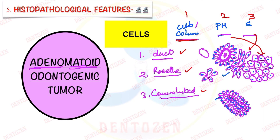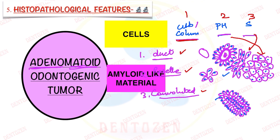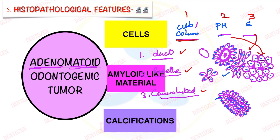Apart from the cells, we have two other components. The second component is amyloid-like material, which is a pink staining material present in between the tumor cells. The third component is calcifications, which are blue colored and also present in between the tumor cells. So it is a diverse tumor with different cells arranged in duct-like, rosette, and convoluted patterns, polyhedral cells in nests, spindle cells in between, amyloid-like material, and calcifications.